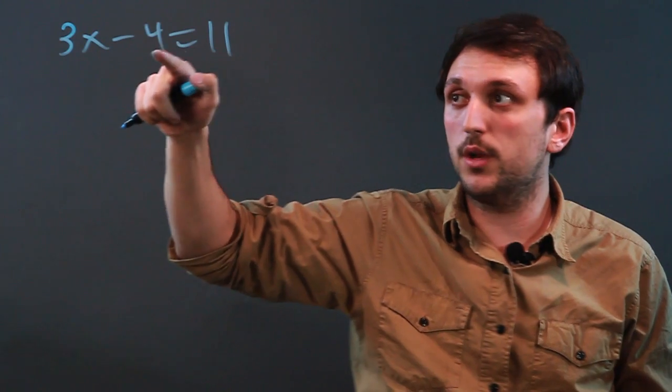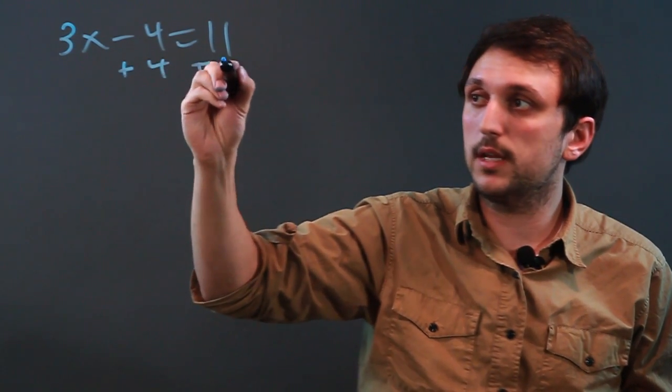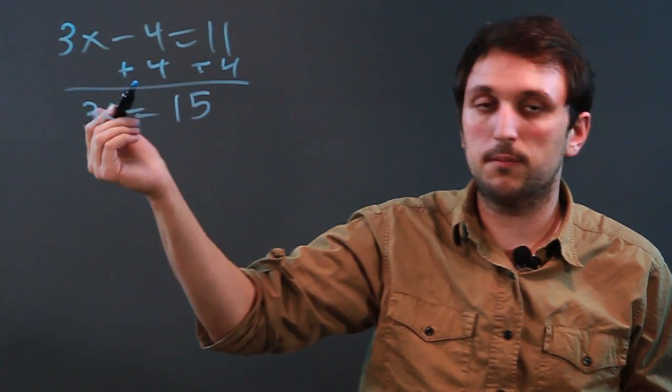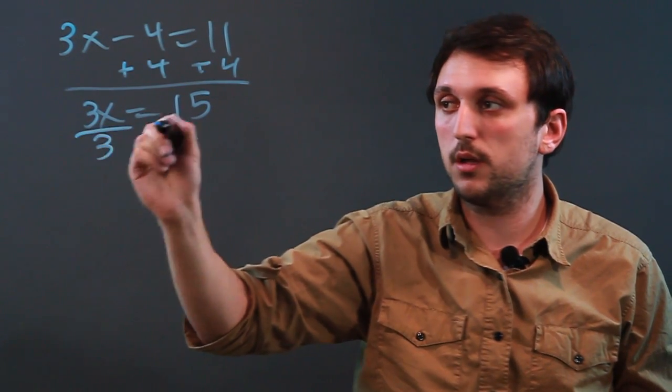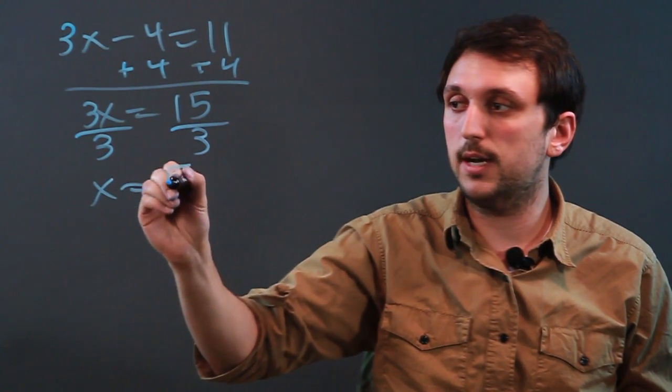The first thing you want to do is get all the numbers on one side and the variables on the other. So we're going to add 4 to each side, which gives us 3x equals 15. Next we want to isolate the variable, so we divide by 3. And what we do to this side, we do to this side. So we get x equals 5.